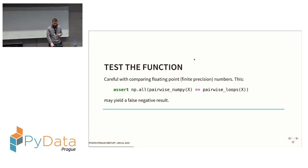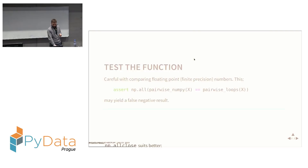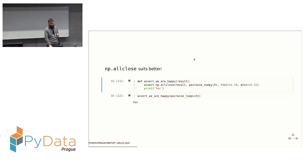We should test that the function we're implementing is doing the right thing. After every implementation I do a simple assert. Using numpy.all to compare numbers is not the best idea because of floating point arithmetic, so it's better to use allclose with a low tolerance. That's my 'we are happy' function.